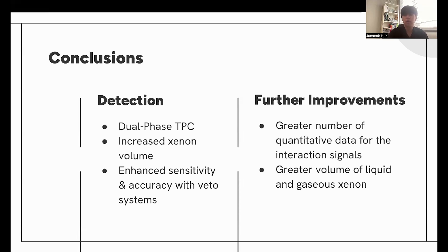Further improvements to the detector that can be made would be to use a greater number of quantitative data for the interaction signals and to use a greater volume of liquid and gaseous xenon, because as stated above, there weren't neutron signals that were confirmed to be WIMP collisions. However, if a greater number of data were used and a greater volume of xenon was used, there could be a statistical correlation that can be found.